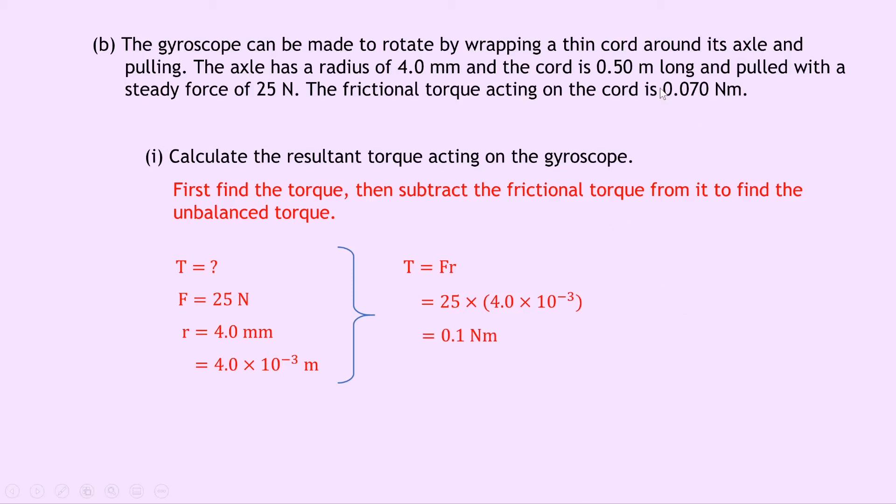Now we've got our torque and from the question, our frictional torque is 0.070 Nm. So we can use these two values to find the unbalanced torque. So the unbalanced torque, which I've called T_un, is equal to T, which we've just calculated, minus the frictional torque, which equals 0.1 - 0.070, which gives an answer of 0.03 Nm.